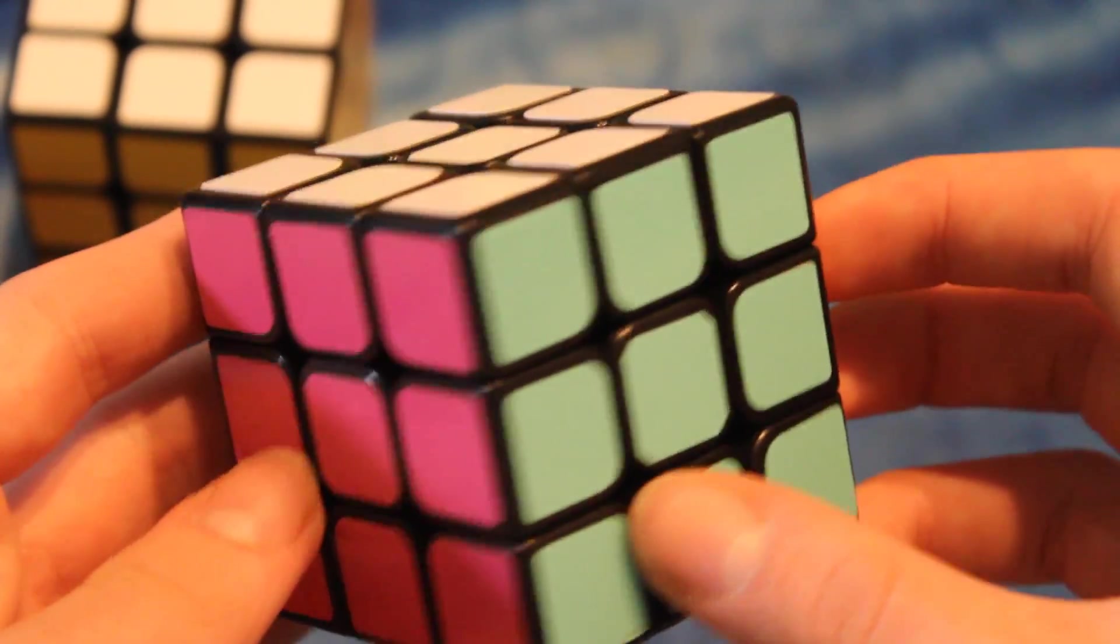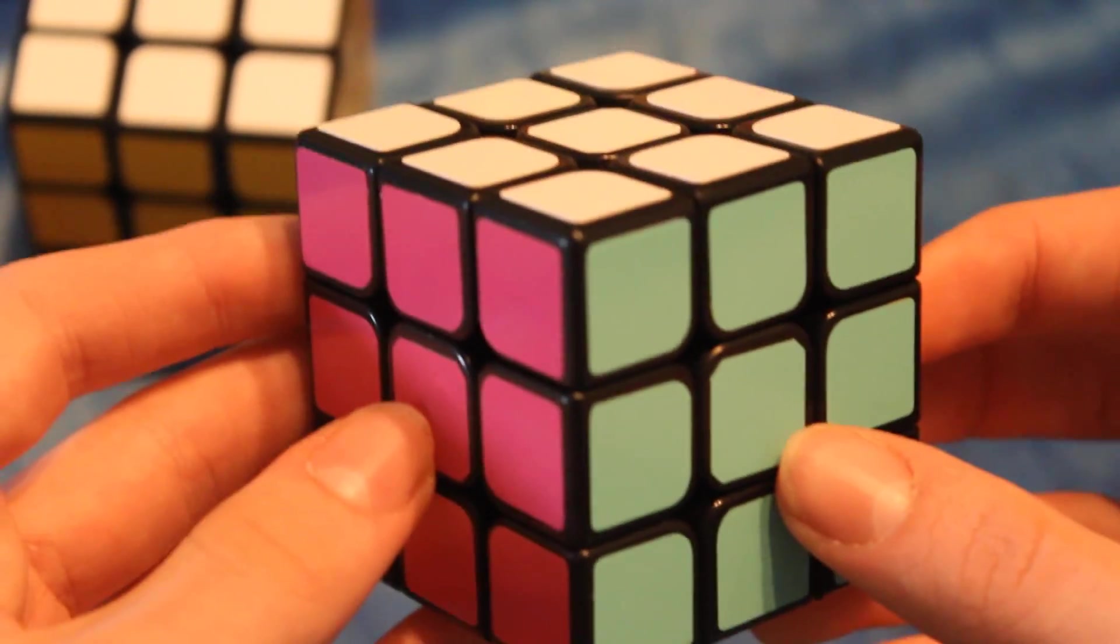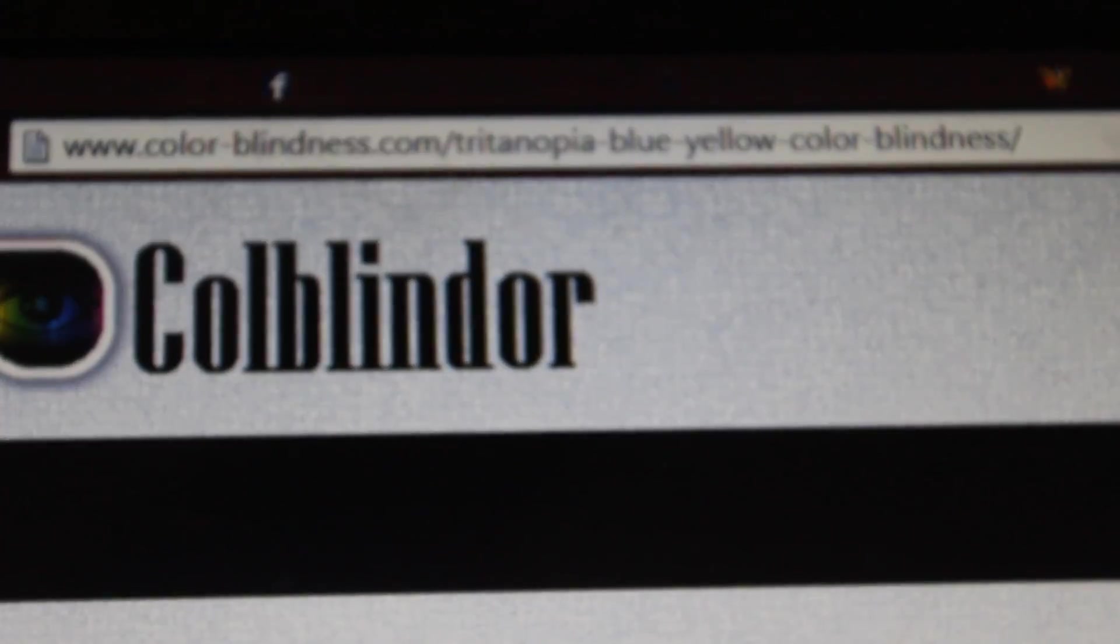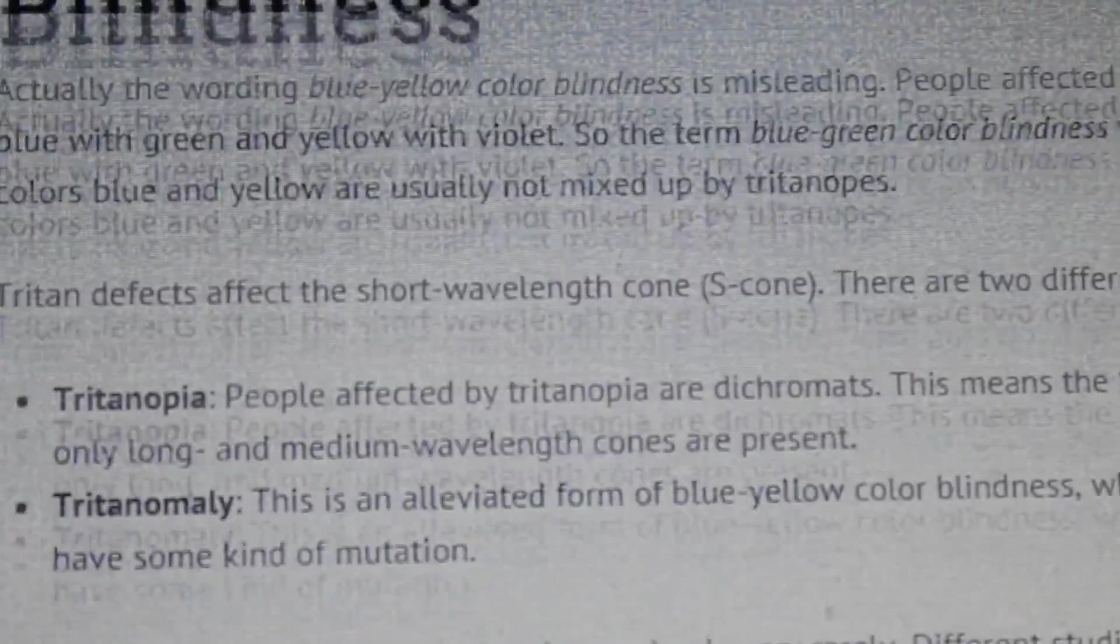Tritonopia colorblindness can happen in the seventh chromosome, and it's autosomal. It's pretty rare. If you want to know more about colorblindness, you can click in the description and look at these several websites that are appeared on the screen right now.